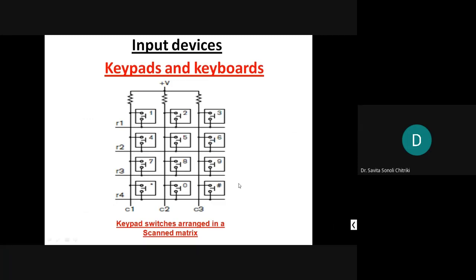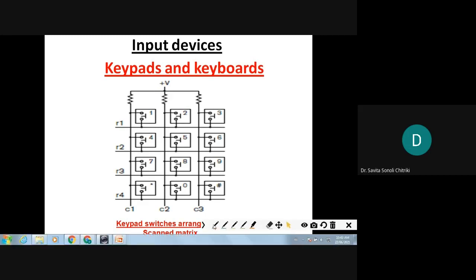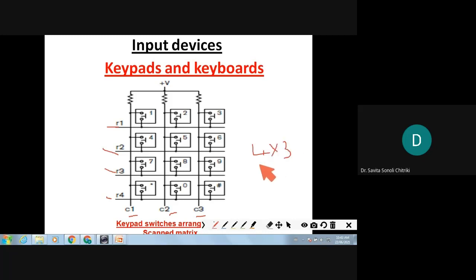Input devices: the first input device that comes to mind is keypads and keyboards. You can see how they are connected — there are four rows (R1, R2, R3, R4) and three columns (C1, C2, C3). This is a four-by-three keyboard matrix. With 12 switches you can connect keys: 1, 2, 3, 4, 5, 6, 7, 8, 9, dot/star, 0, and hash.